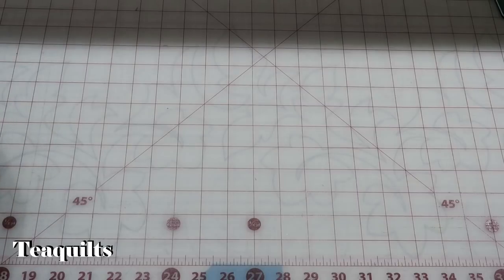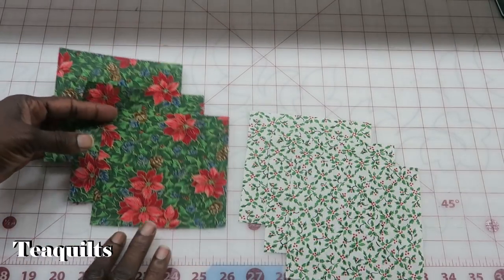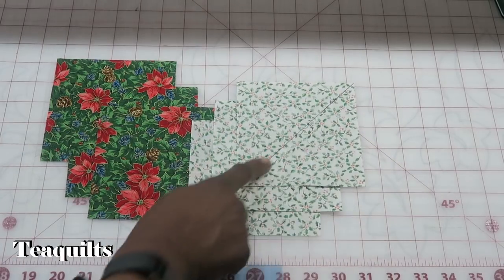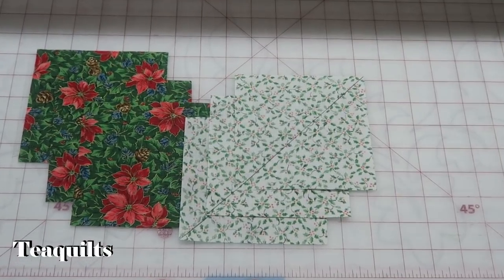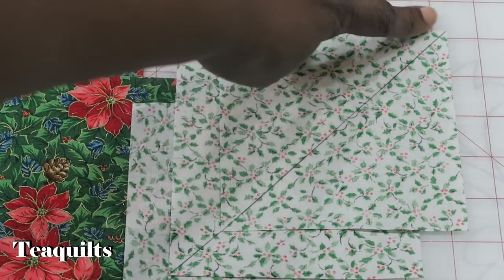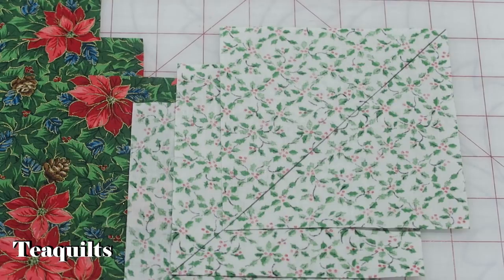When you have your two sets of blocks cut, on one set of your blocks you want to go ahead and draw a diagonal line down the center. Then you are actually going to go to your sewing machine and you're going to stitch one quarter of an inch on both sides of that drawn line. I'll do that step and I will come right back.